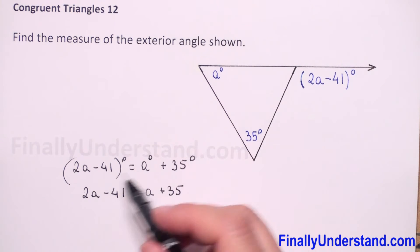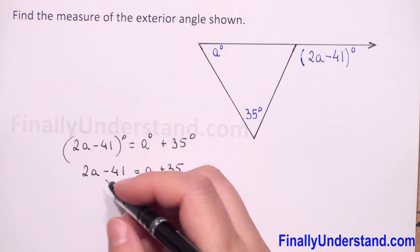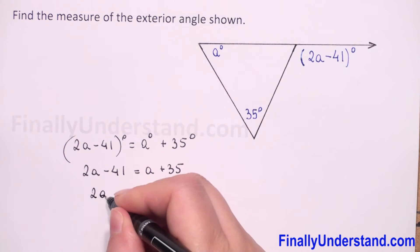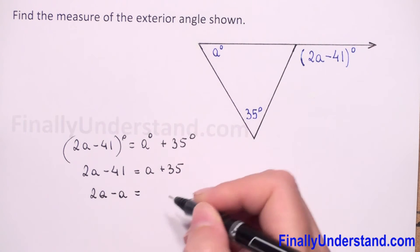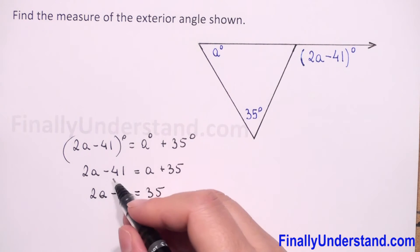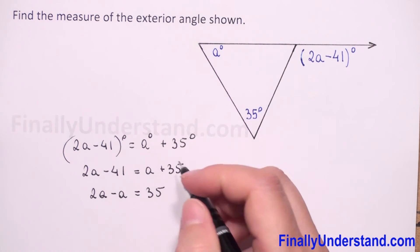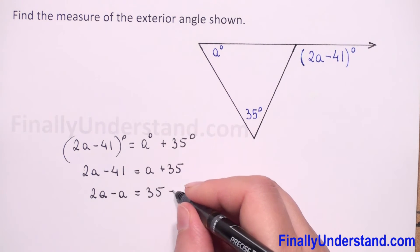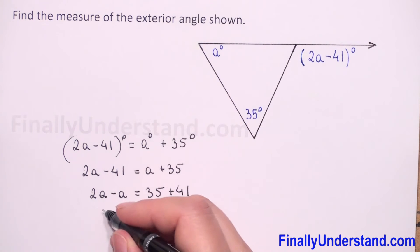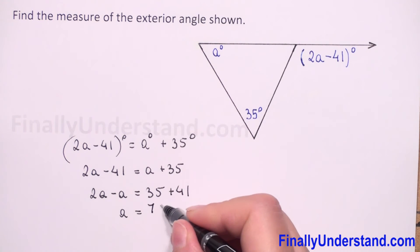I will move a to the left side, so we have 2a minus a is equal to 35 and 41. I got the 41 to the right side, so it will be plus 41. 2a minus a is equal to 76.